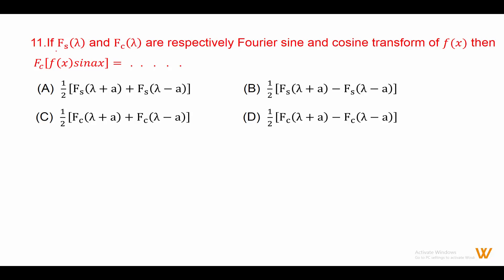Eleven: if Fs(lambda) is the Fourier sine transform and Fc(lambda) is the Fourier cosine transform of fx, then the Fourier sine transform of fx sin(ax) equals one half times [Fs(lambda plus a) minus Fs(lambda minus a)]. Answer is option B.